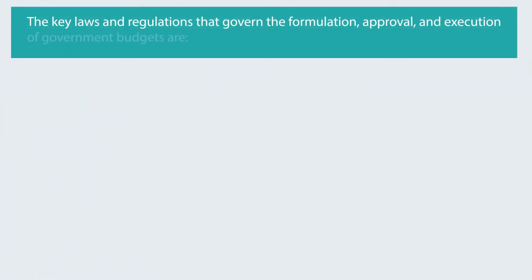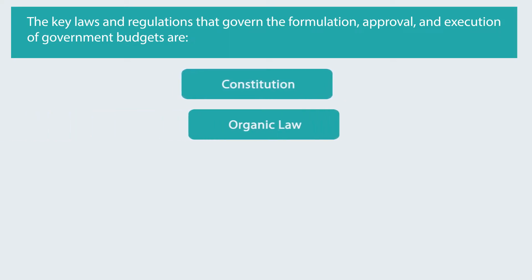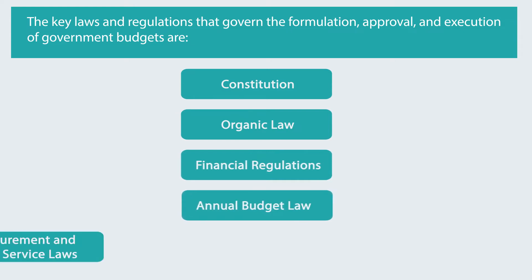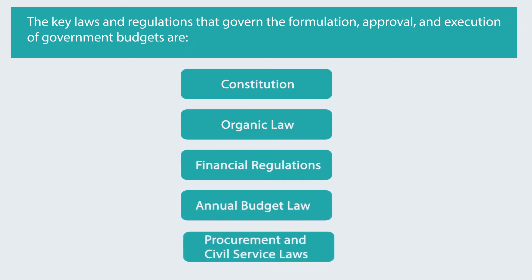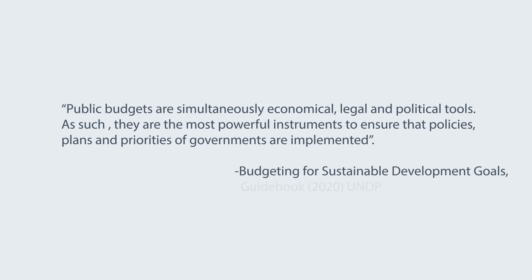The key laws and regulations that govern the formulation, approval, and execution of government budgets are the Constitution, the Organic Law, Financial Regulations, Annual Budget Law or Appropriation Act, Procurement and Civil Service Laws, etc. Public budgets are simultaneously economical, legal, and political tools. As such, they are the most powerful instruments to ensure that policies, plans, and priorities of governments are implemented.